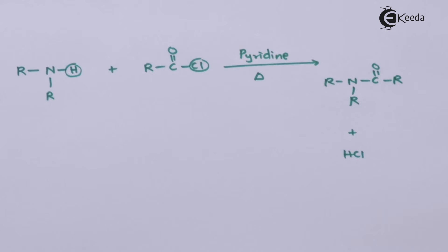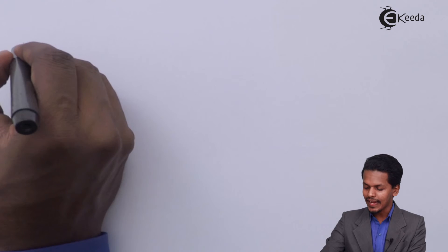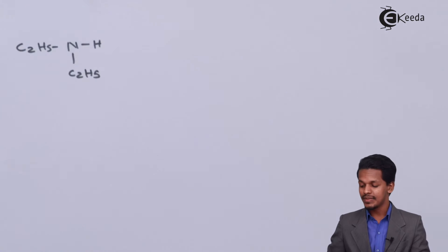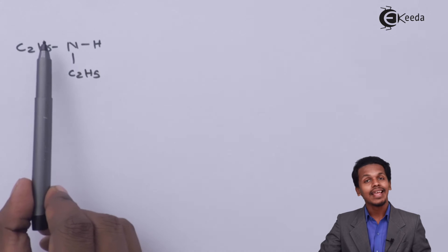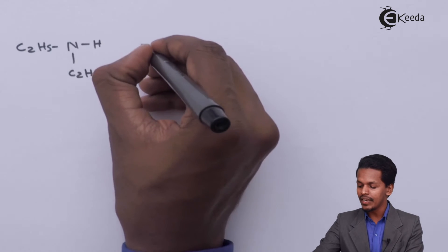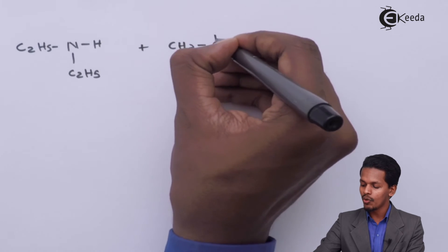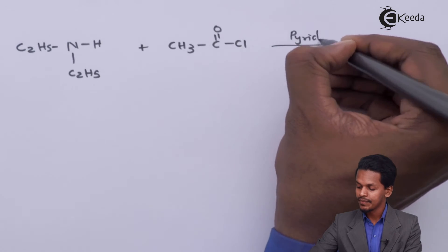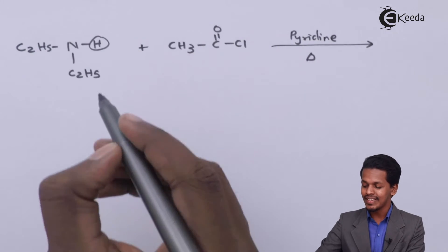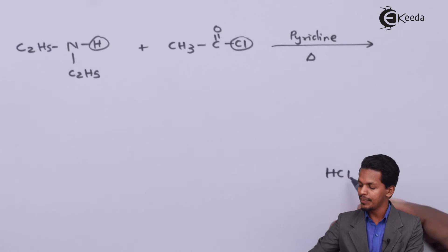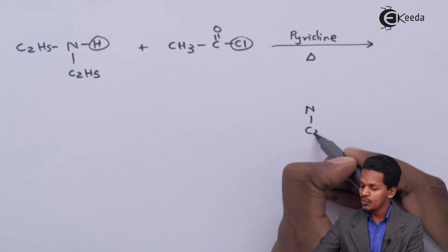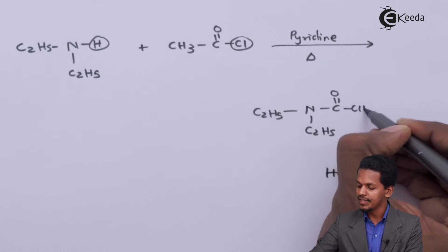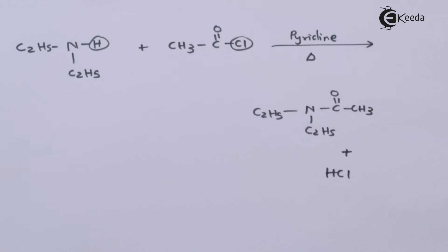For example, consider the secondary amine C2H5–NH–C2H5, which is N-ethylethanamine. If we react it with CH3C=OCl (acetyl chloride) in the presence of pyridine at higher temperature, the H and Cl are removed as HCl. The main product is (C2H5)2N–C=O–CH3, which is again an amide.